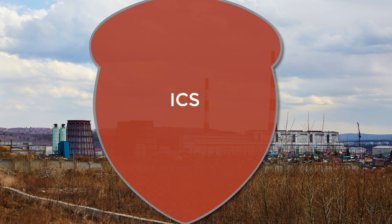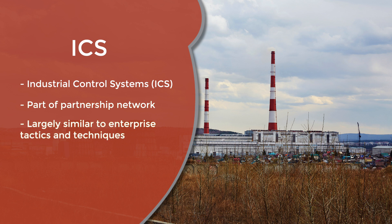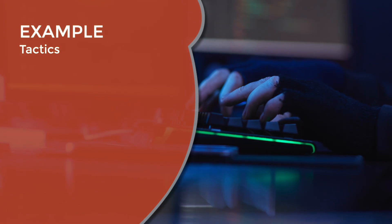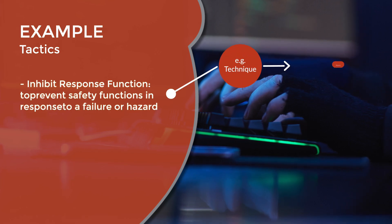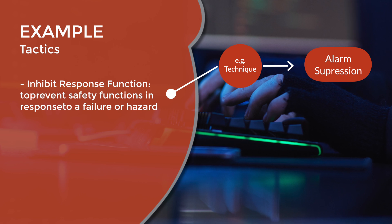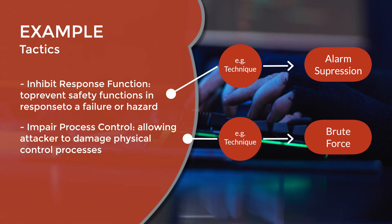Lastly, MITRE includes a matrix on industrial control systems as part of their partnership network. Largely the same as enterprise tactics and techniques, the ICS matrix contains two tactics that are specific to ICS networks, including inhibit response function — applied to prevent the implementation of safety functions in response to a failure or hazard — and impair process control, allowing an attacker to damage physical control processes.